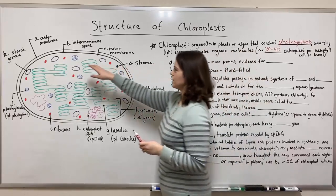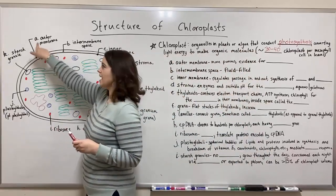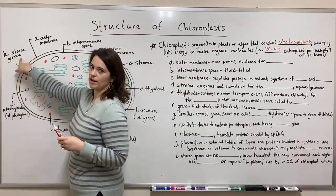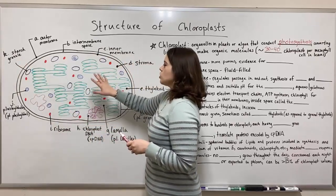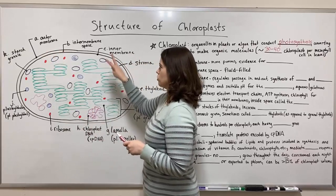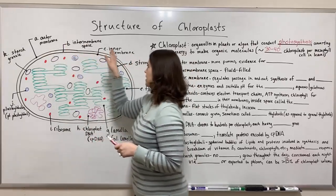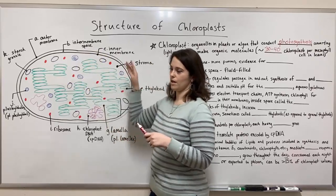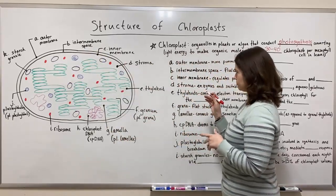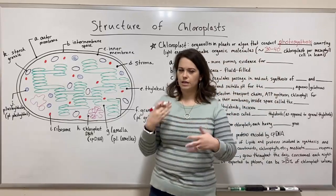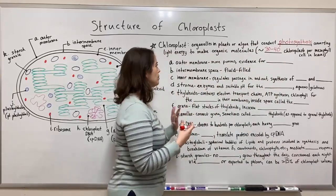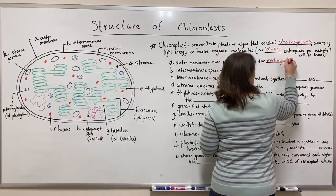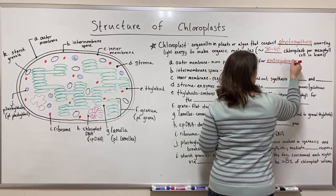I'm going to start right here with the outer membrane, labeled A, and we will work our way around these labels until we get to the final one, K, the starch granule. So let's start by talking about that outer membrane. You'll see there are two membranes — an outer membrane and an inner membrane — with an intermembrane space between them, and then everything else is inside that inner membrane. The outer membrane is particularly porous; a lot of stuff can get through it, and it is evidence for something called endosymbiosis.